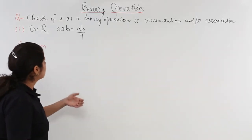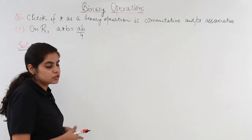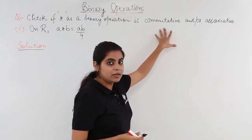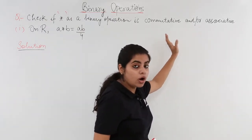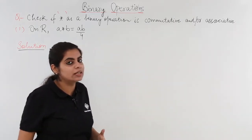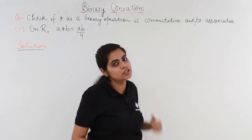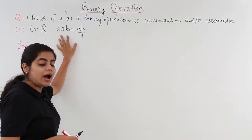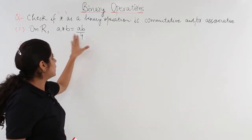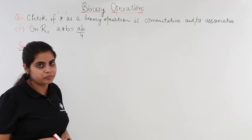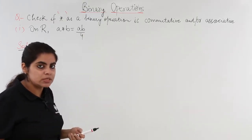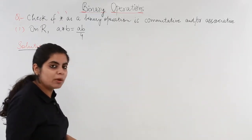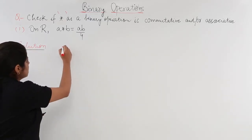Let's read the question together. Check if star is a binary operation. I have a binary operation named as star and I have to check whether it is commutative and associative, or only commutative, or only associative — that is why we have 'and/or'. The question is on R, that is real numbers. A star B is equal to AB upon 4. This question has two steps: the first is checking whether it is commutative, and the second is checking whether it is associative. So we go about solving commutative first and then associative.